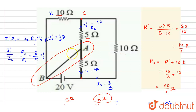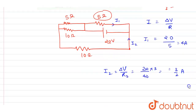Applying Kirchhoff's junction law, the net incoming current must equal the net outgoing current. So the current through branch AB is 0.5 plus 4 plus 1, which equals 5 amperes. This is the answer.